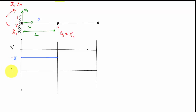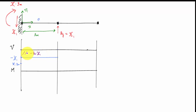For the moment diagram: the moment reaction X₁ times three meters acts such that I go up, plotting a value of X₁ times three meters. The area under the shear diagram is negative three meters times X₁, which brings me to zero. Because the shear is constant, the moment diagram is linear — it looks like a straight line going from X₁·3m down to zero.